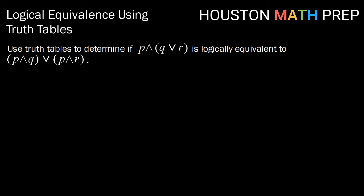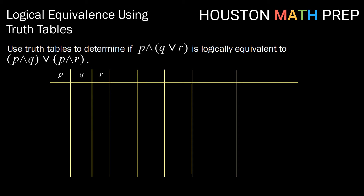For our last example, we're going to look at one where we have three statements. We're going to determine if P and (Q or R) is logically equivalent to (P and Q) or (P and R). This one is a bit longer. With three statements, we need to find all combinations of truth values for P, Q, and R. By the fundamental counting principle, with each having two possible outcomes, we get 2 times 2 times 2, or 8 possible combinations.